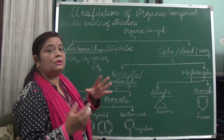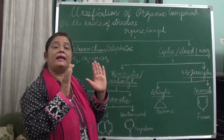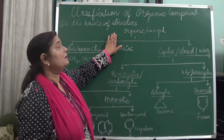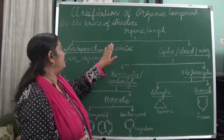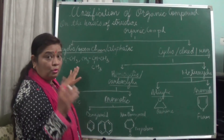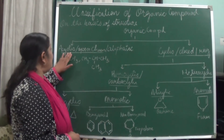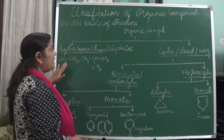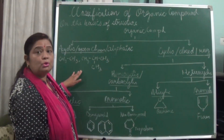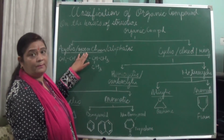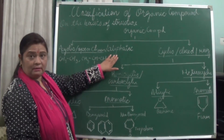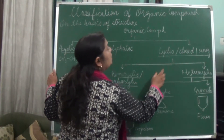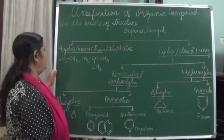It means how the carbon atoms are arranged in the molecule. Accordingly, this organic compound can be classified into two major groups: acyclic and cyclic compounds. Acyclic compound is also known as open chain compound or aliphatic compound, and cyclic compound is also known as closed or ring compounds.